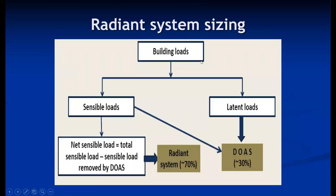Radiant system sizing is mainly determined based on the building load, which is categorized into sensible loads and latent loads. The sensible load handled by the radiant system is the total sensible load minus the sensible load removed by DOAS — the Direct Outside Air System — which is primarily a ventilation system. The radiant system carries 70 percent of the sensible load, while DOAS handles 30 percent of the sensible load and takes care of the latent load.